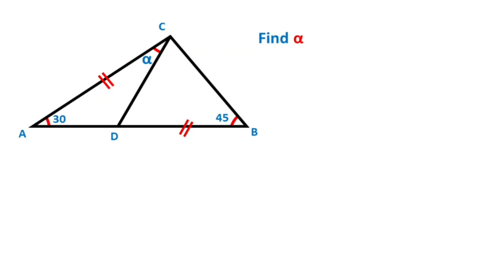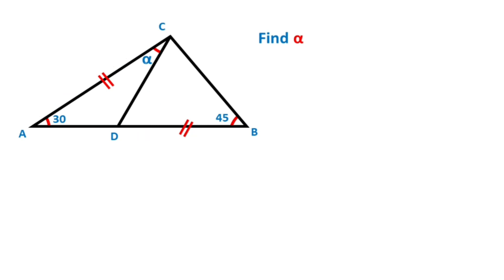Hello everyone. In this video we have one triangle. Here is 30 degrees and here is given 45 degrees, and these two sides are equal, and alpha is S.